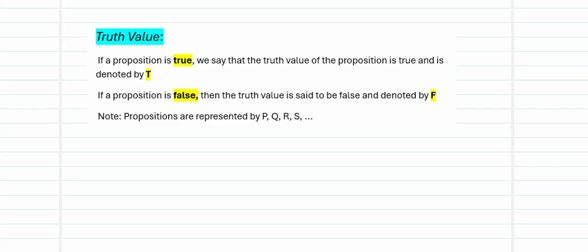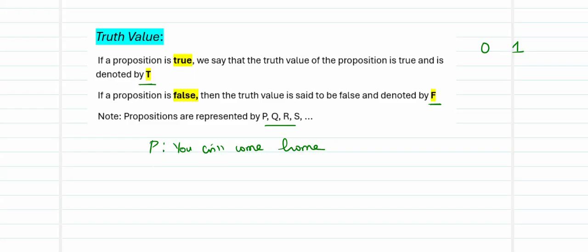The truth value is denoted by capital T when the proposition is true, and by capital F when it is false. Note that although zeros and ones are common in logic, for statements we stick to T and F. Propositions are usually represented by capital letters. For example, let P be the statement 'You will come home,' and let Q be the statement 'Ram is studious,' and so on.